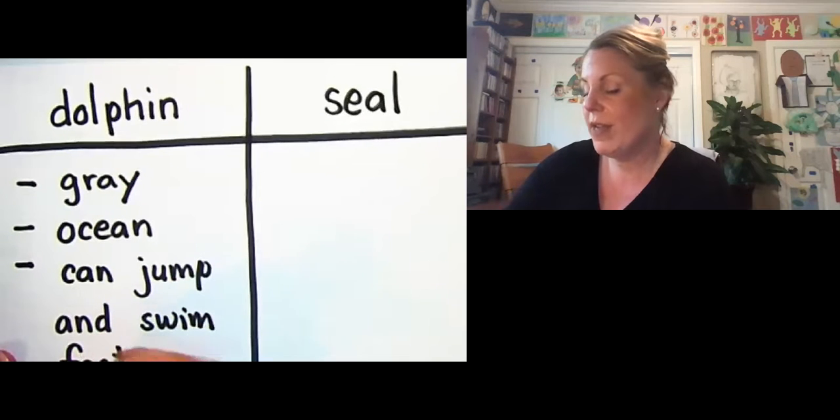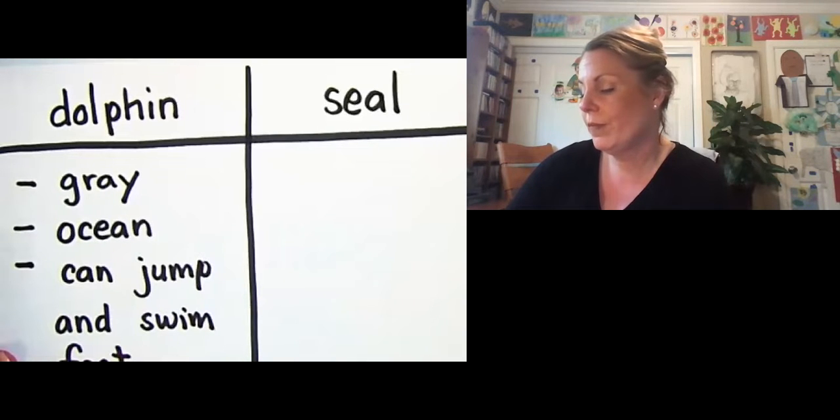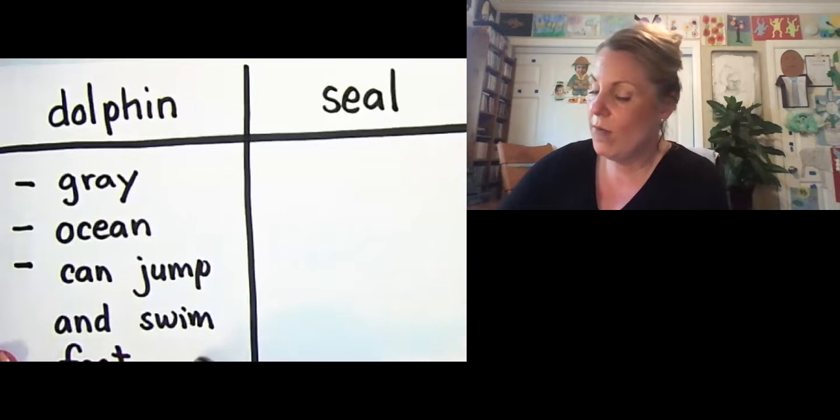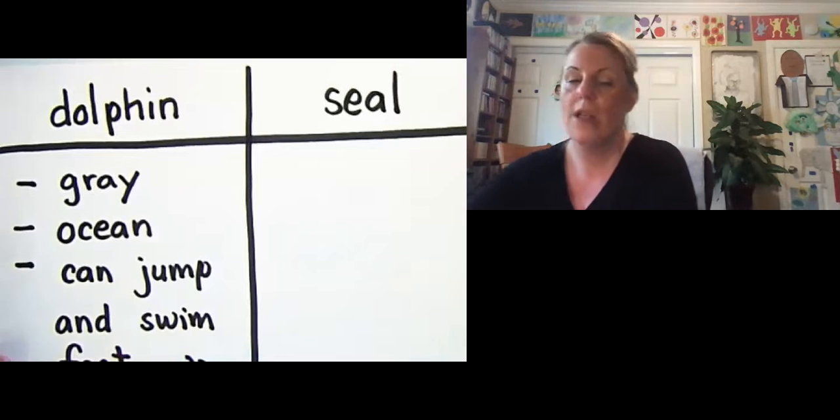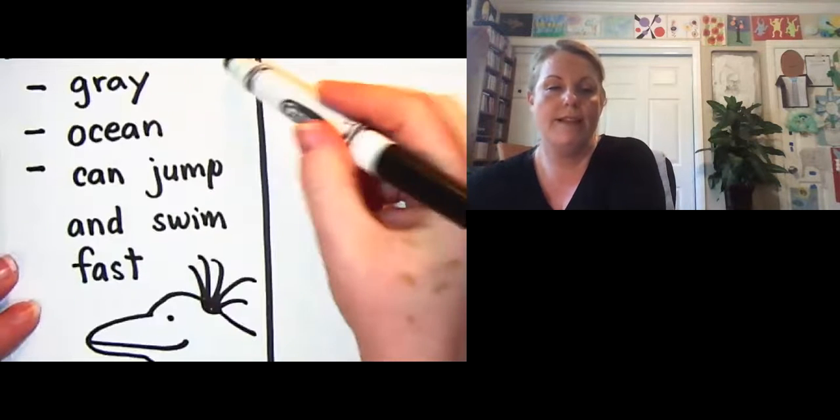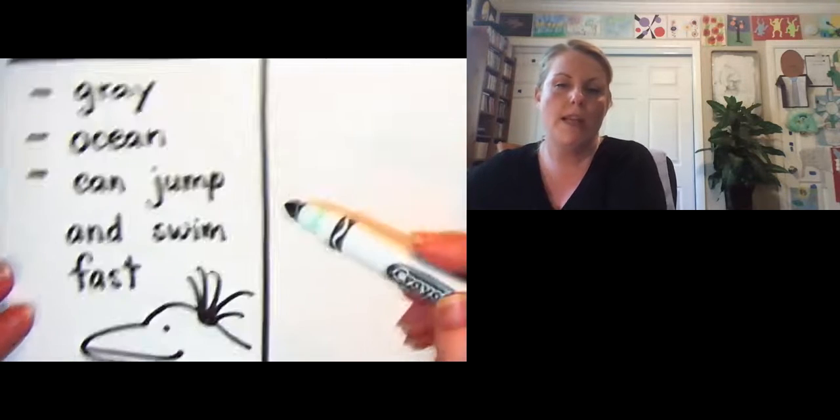Now I'm not very good at drawing dolphins but I'm gonna try my best. It's a long little snout. And I'm gonna have this part coming down, okay, and here's its blowhole. And something I like about dolphins is they're always smiling, right? So they are gray, they live in the ocean, they can jump and swim fast. So that's my thing about a dolphin.